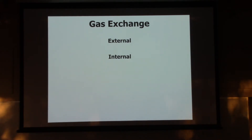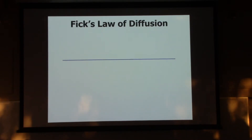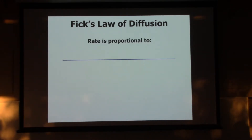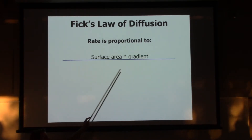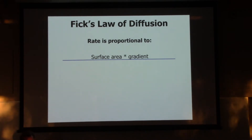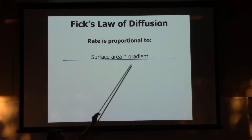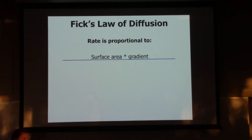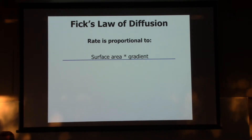For diffusion, to understand what influences it, let's go back to Fick's law. The rate of diffusion is proportional to the surface area multiplied by the gradient. If you've got a larger surface area - we have a huge surface area in our lungs - and if the gradient goes up, then diffusion goes up. In this case, the gradient is between what's in your alveoli and what's in your blood, or between your blood and the tissues being served by blood vessels.